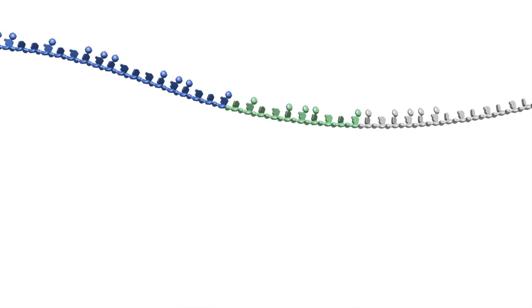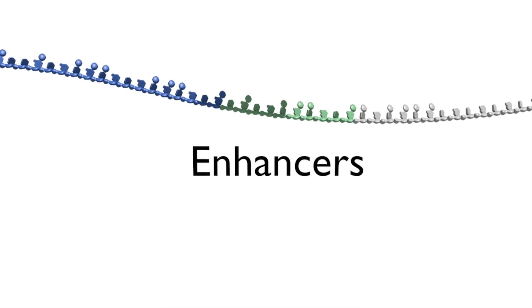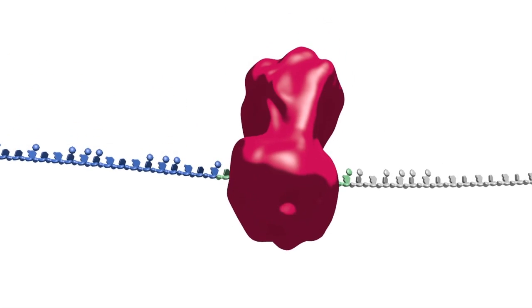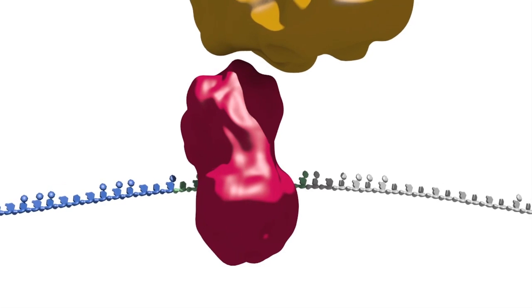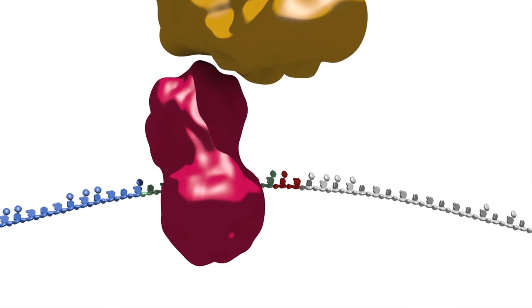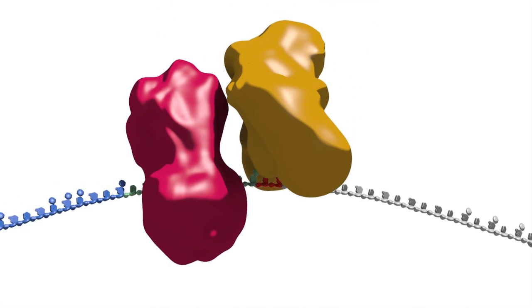RNA elements that positively affect splicing are referred to as enhancers. Such intronic and exonic splicing enhancer sequences typically bind proteins that increase the ability of spliceosomes to identify nearby splice sites in a pre-mRNA.